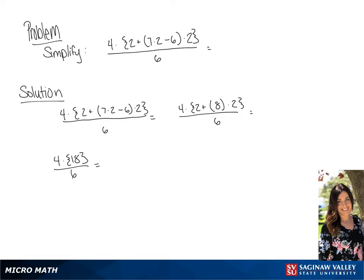So we have 4 times 18 all over 6. We can simplify the 18 over 6, so it will be 3 over 1. So we have 4 times 3, which is equal to 12.